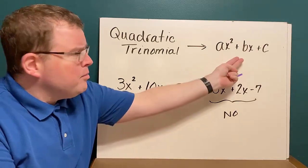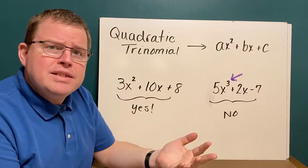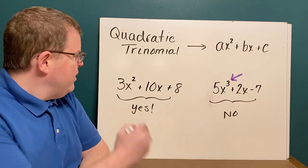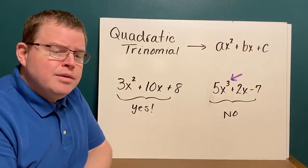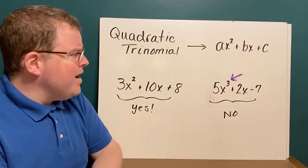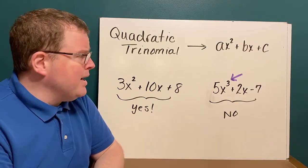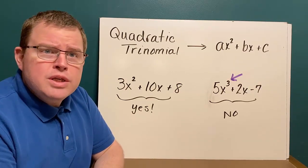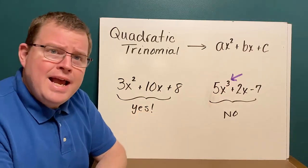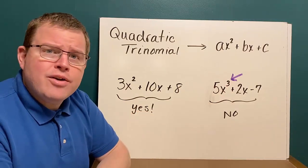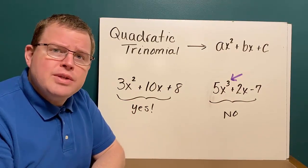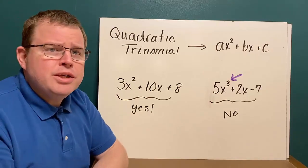A quadratic trinomial has a very particular form: ax squared plus bx plus c, where a, b, and c are some numbers. Here are two trinomials. The first one, 3x squared plus 10x plus 8, is a quadratic trinomial. The second one, 5x to the third plus 2x minus 7, looks close but doesn't have ax squared — it has ax to the third. This one is not a quadratic trinomial. The first expression you could factor using this method; the second you could not.